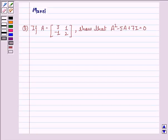Hi and welcome to the session. Let's work out the following question. The question says, if A is equal to the matrix [3, 1; -1, 2], show that A² - 5A + 7I = 0.